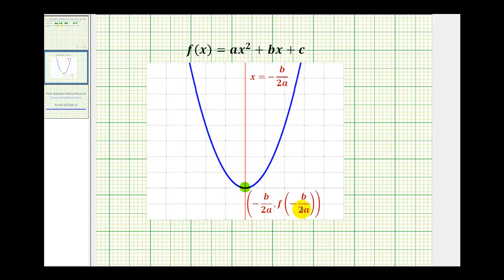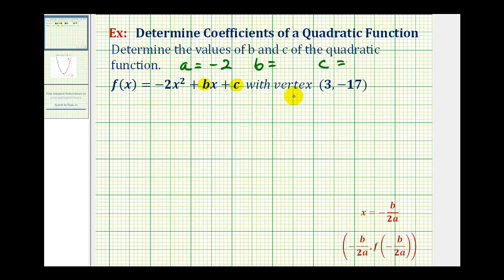And then the y coordinate of the vertex, because it's on the function, would have to be f of negative b divided by two a. We can use this information to solve this given problem.